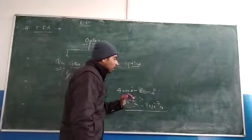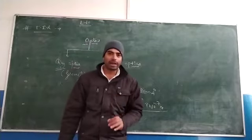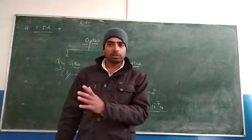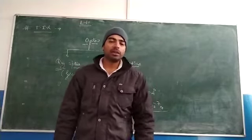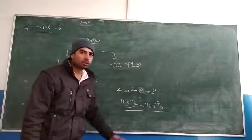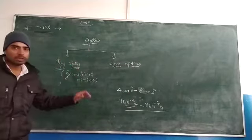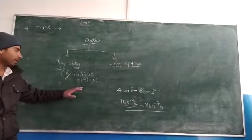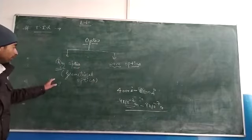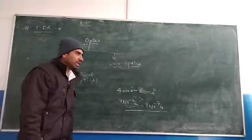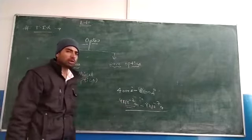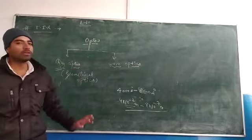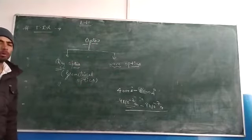तब light straight line में नहीं, थोड़ा different behavior दिखाने लगती है। इसका मतलब है कि अगर hole या कोई भी object जिस पर हम light गिरा रहे हैं, उसकी dimensions light की wavelength के equal हों, तो light different behave करती है। उस different behavior को explain करने के लिए wave optics बनाना पड़ा। Ray optics तब पढ़ेंगे जब hole का size wavelength से बहुत बड़ा हो, और wave optics तब — जब hole बहुत छोटा हो, जैसे diffraction और interference में।